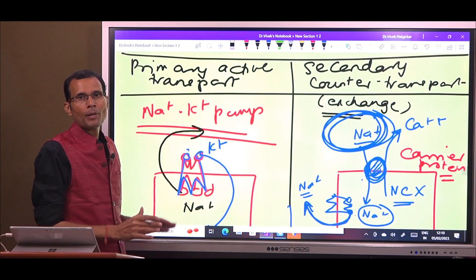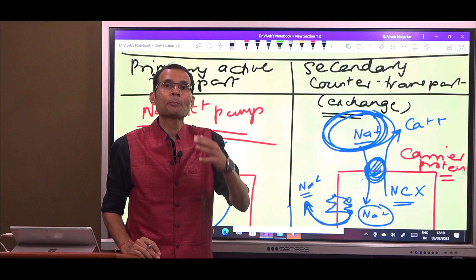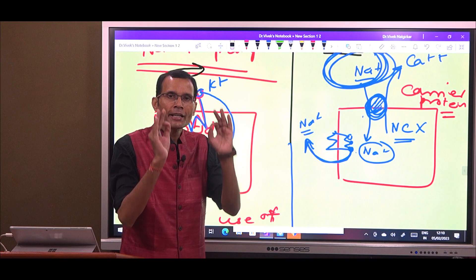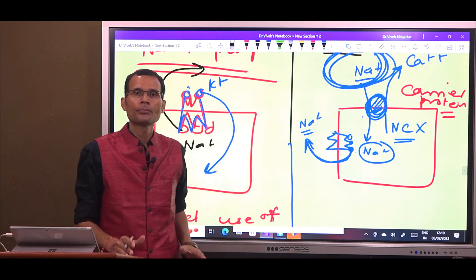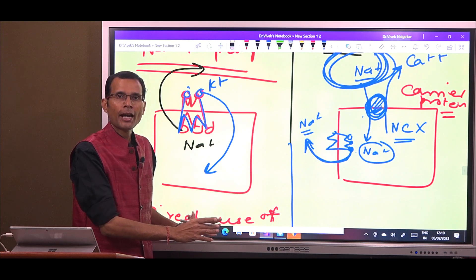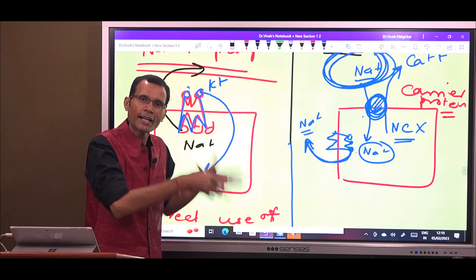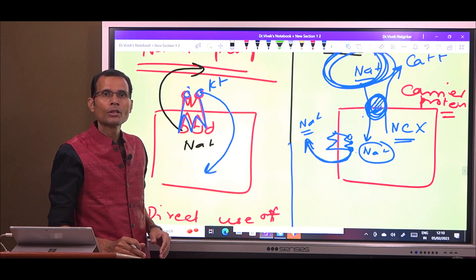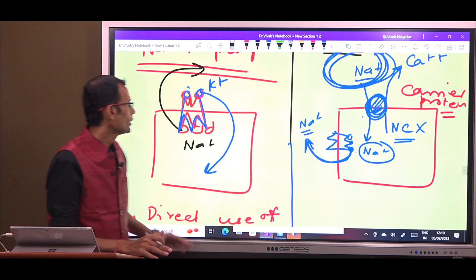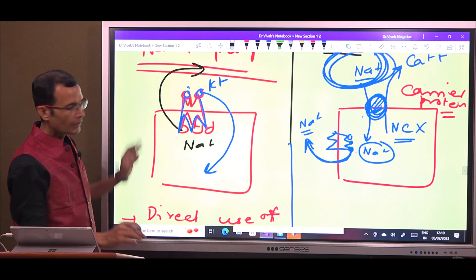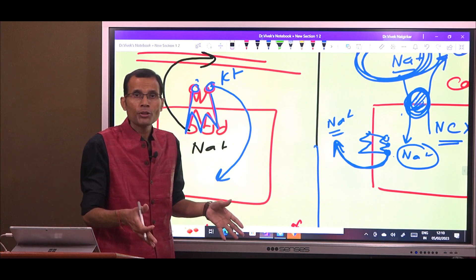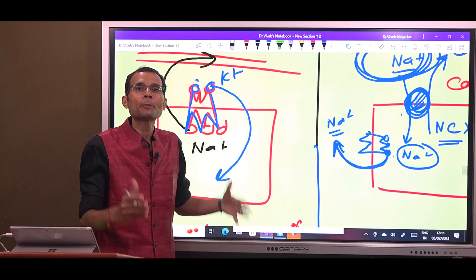Why do we call the sodium-potassium pump primary active transport? Primary, because it uses ATP directly. There is a direct breakdown of ATP, and that energy is used then and there to transport sodium and potassium. Look — here is a pump; I hope you can see the diagram clearly. This pump protein is also called ATPase.